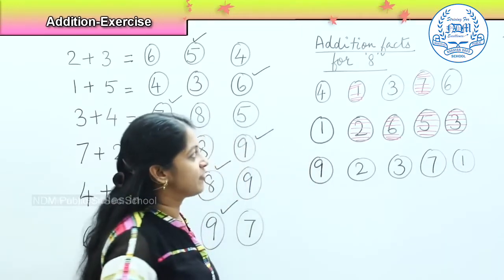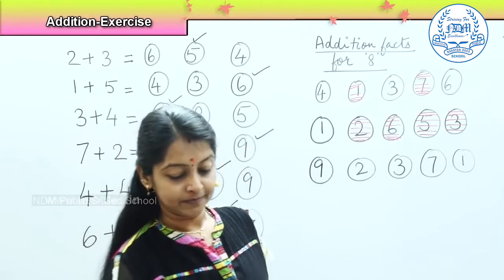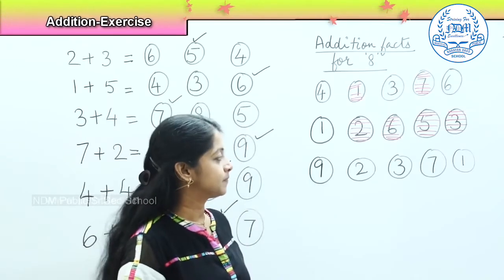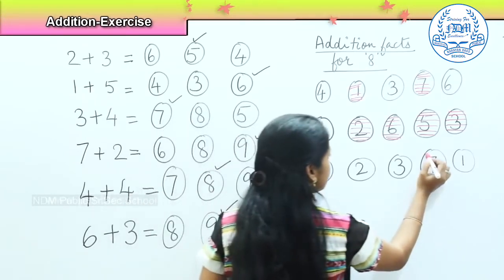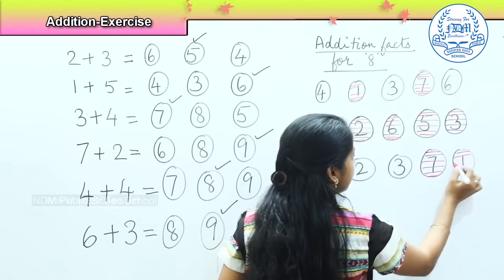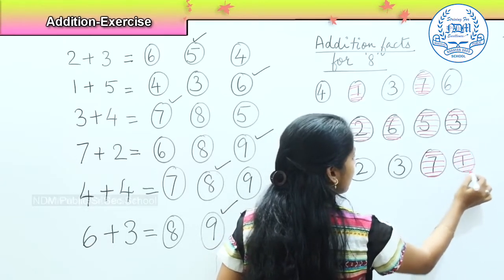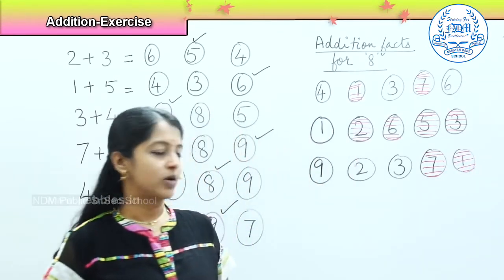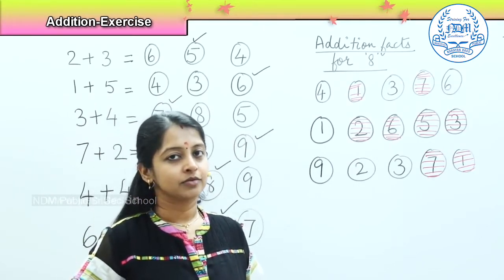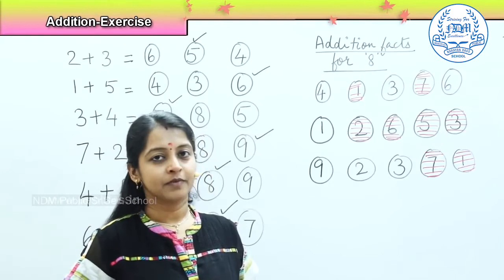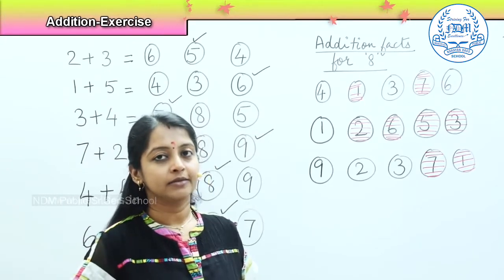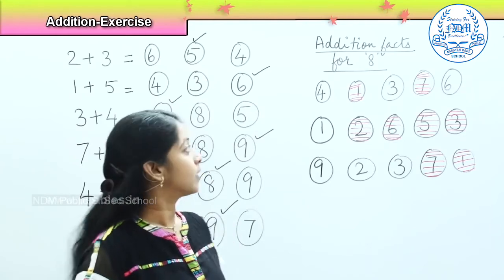So, what is the addition fact here, children? Very good. You need to shade number 7 and number 1. So 7 plus 1 will make number 8. Was it interesting? Shall I give you the question for number 9? Shall we do it?